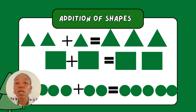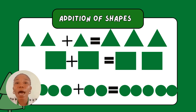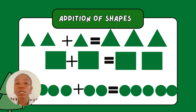The next one is square shape. We have one square plus one square. Let's count together: one, two. So we are having two squares. The next one is circle. We have three circles plus two circles. When you count everything together, equals to five circles.